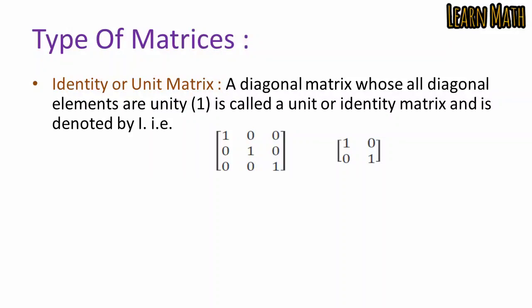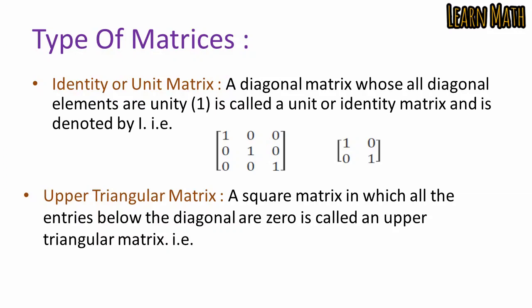An upper triangular matrix is a square matrix in which all entries below the diagonal are zero. In the given example, all elements below the diagonal are zero, so this is called an upper triangular matrix.